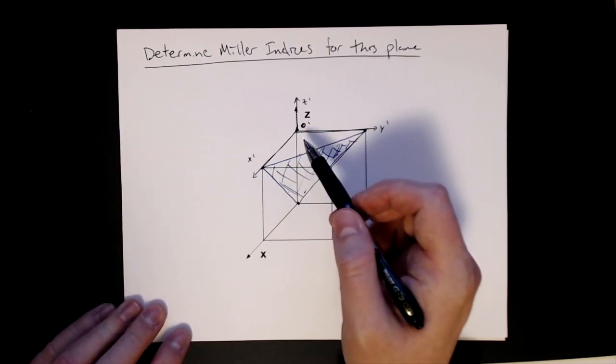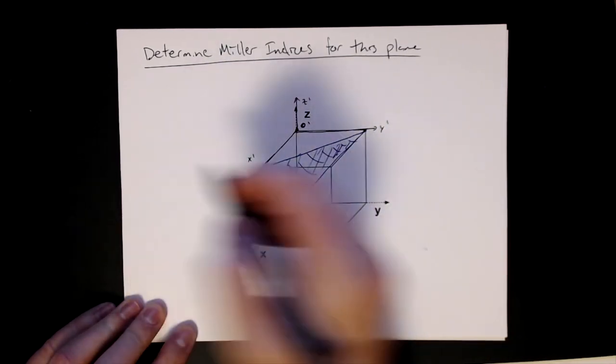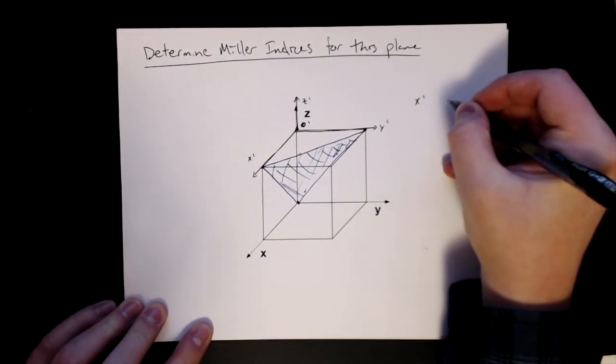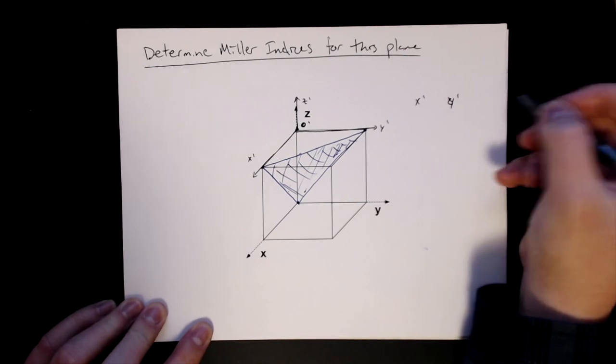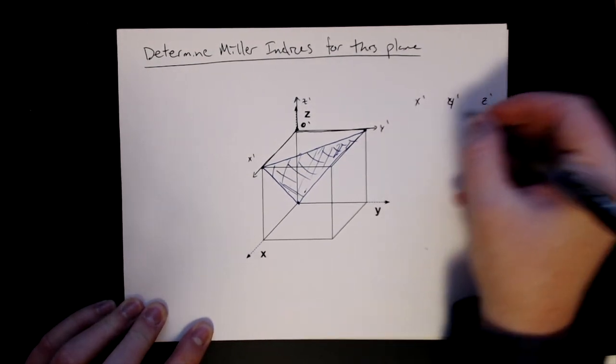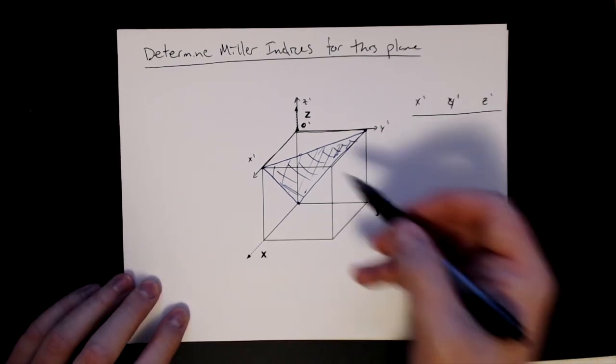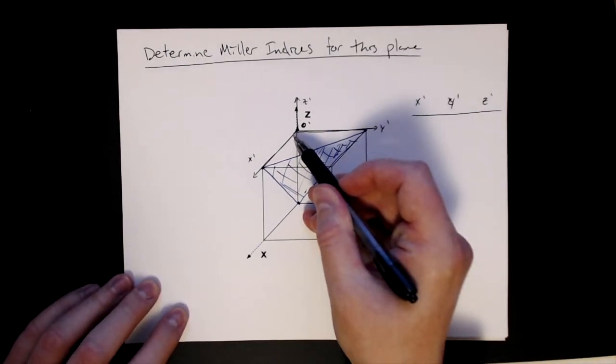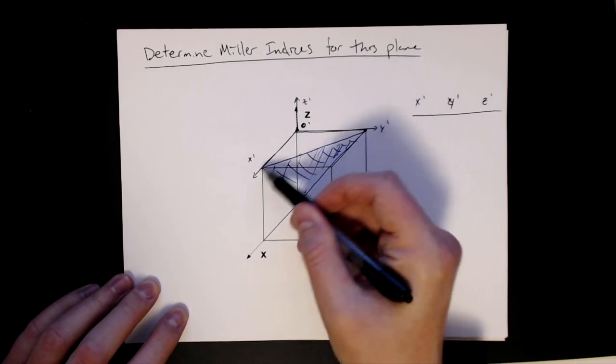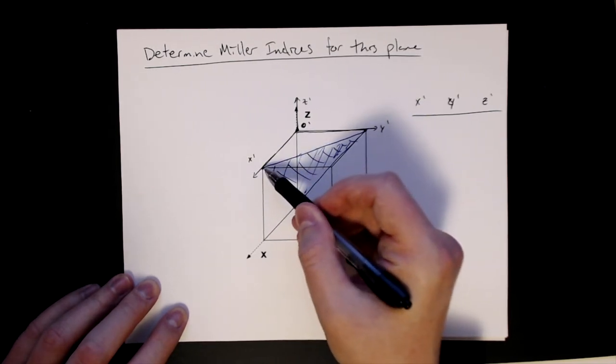So from there, I want to do my same little table here. So x prime, y prime, and z prime. It's my table. And I need to pick out those intercepts. So again, I start with x prime. I look on the x prime axis for the intercept with the plane, and I see it right here.